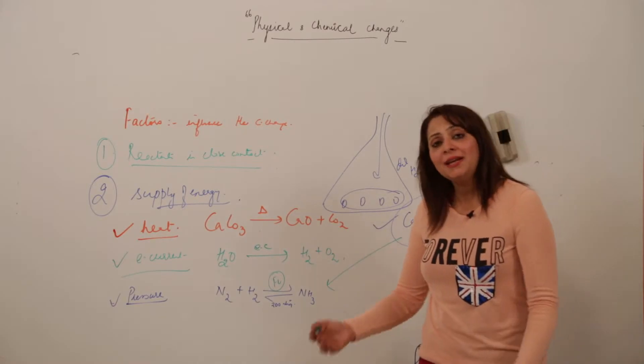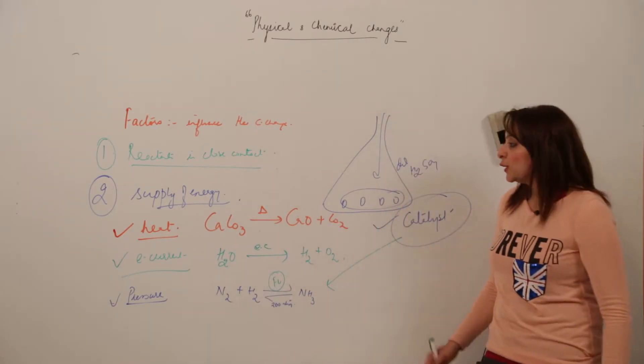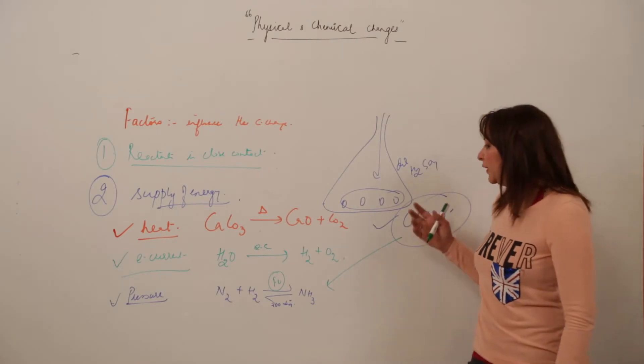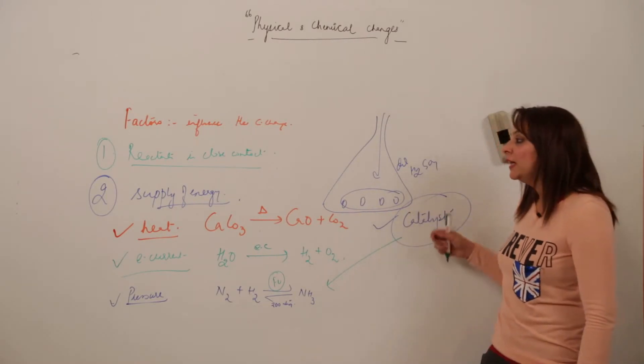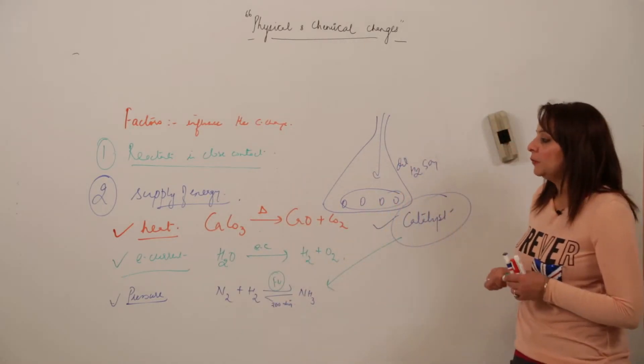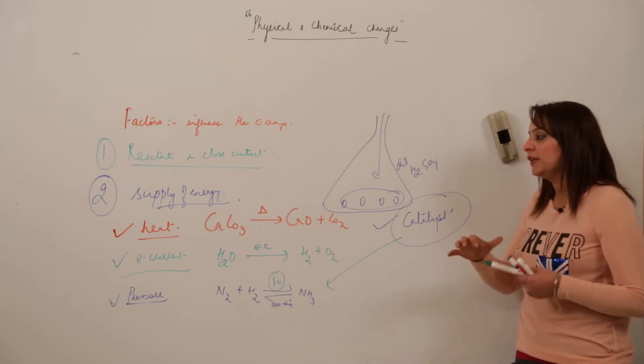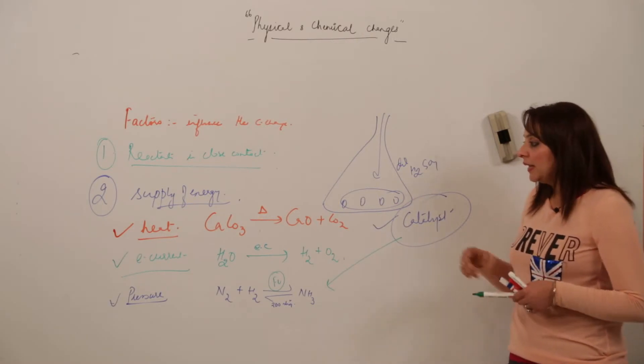In many reactions, catalysts are used and Haber's process is one of them. The reaction can happen by the use of catalyst as well as by the supply of energy. There are different modes by which we can supply the energy and the reaction can actually happen.